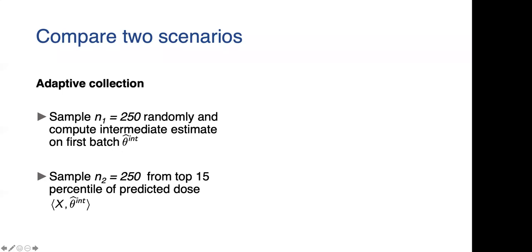Then I'm going to sample the next set of 250, the second half, just from the top 15 percentile of the predicted dose. From the rest of the population, I'm just going to pick patients who need a high predicted dose based on theta hat intermediate. You can think of this as a way of weeding out patients that might do worse on the protocol that you have.